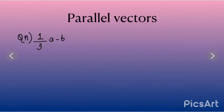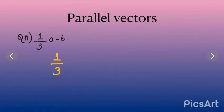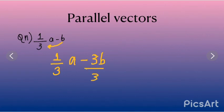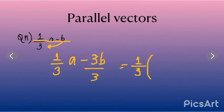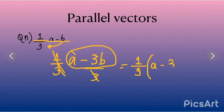Now for parallel vectors, here's another question: 1/3(a minus b). Here they haven't given us a is equal to something and b is equal to something — they just told us to find it. So we have to make 1/3 the common factor, so 1/3 is outside the bracket. Now 1/3 of a minus b — you multiply it, so it becomes 1/3 a minus 3b, and you also divide by 3 because 3 is in the denominator. So 1/3 is the common one out, and when you cut that you are remaining with a minus 3b. So this is your answer.